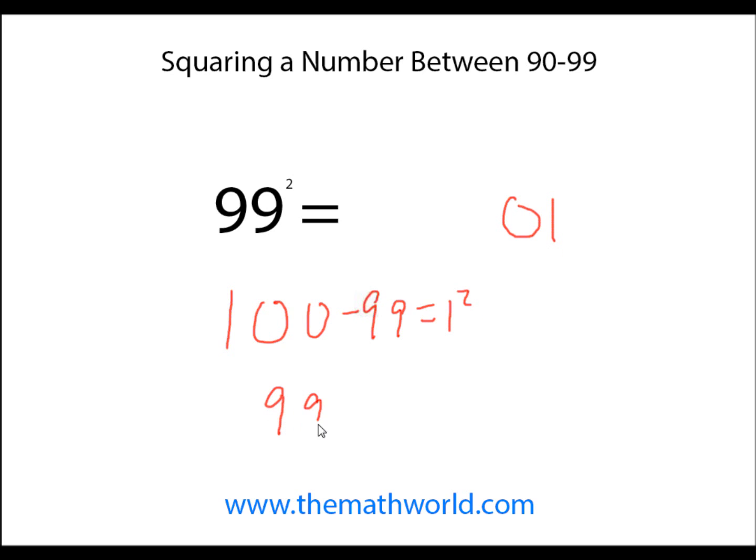Then we're going to take 99 and subtract 1, this number, and we get 98, so 99 squared is 9,801.